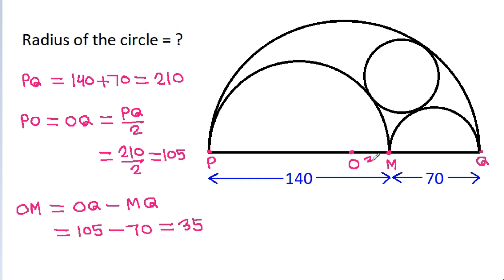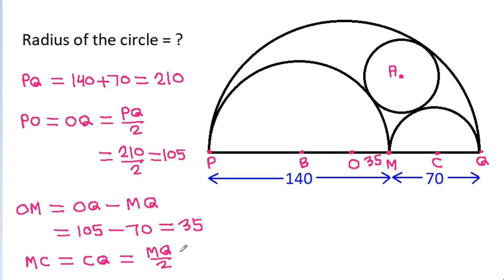So OM is 35. Suppose the centre of this circle is A, the centre of this semicircle is B, and the centre of this semicircle is C. Then MC equals CQ, which equals MQ divided by 2. That is 70 by 2, which is 35. So MC is 35 and CQ is 35.